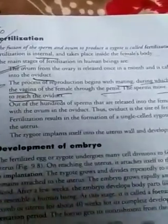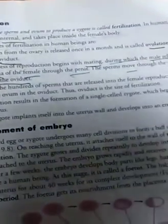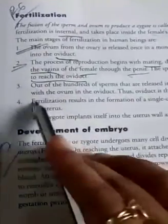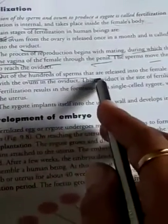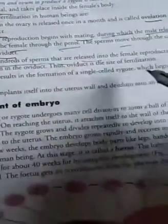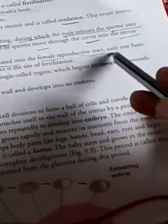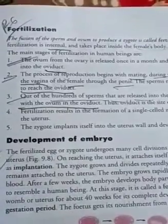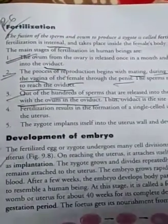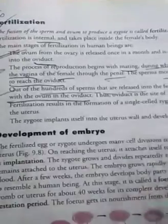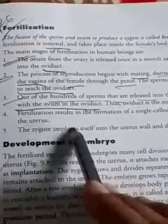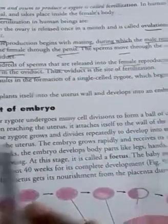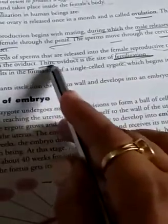In the oviduct, the egg produced by the ovary is present. Third, out of the hundreds of sperms released into the female reproductive tract, only one fuses with the ovum in the oviduct. The most capable sperm is the one that fuses with the ovum. Thus, the oviduct is the site of fertilization.